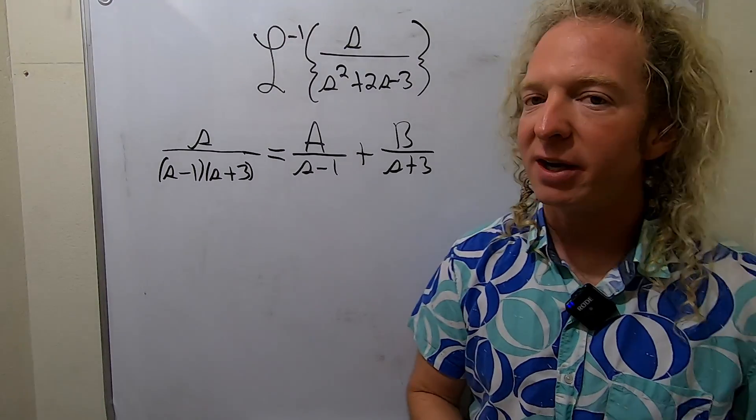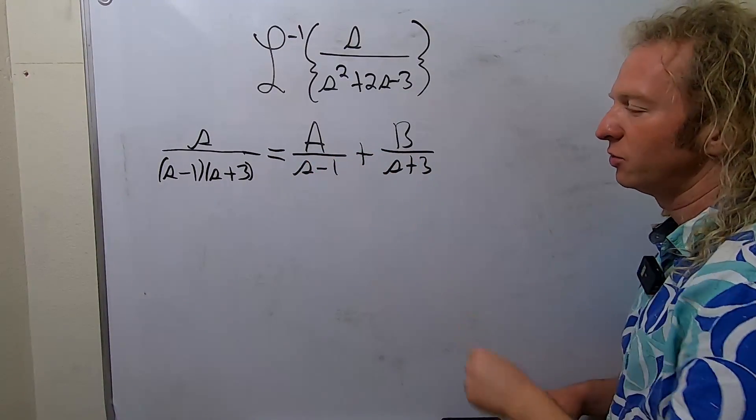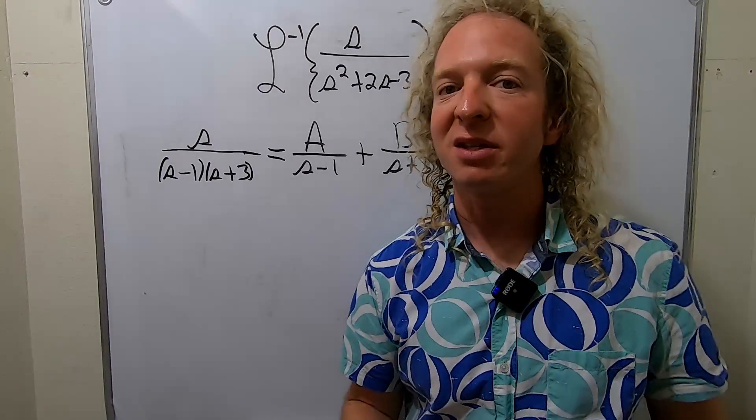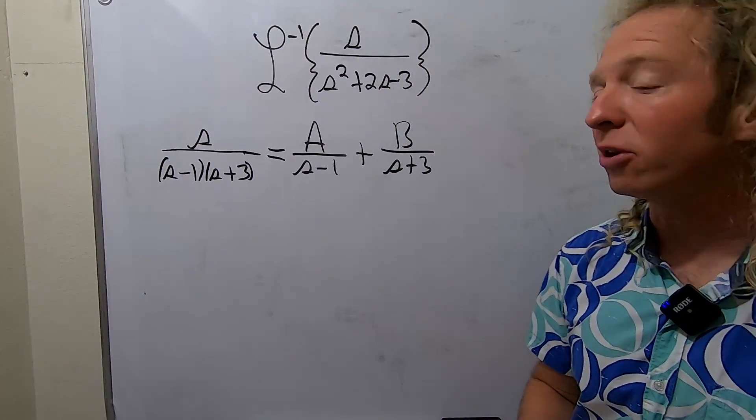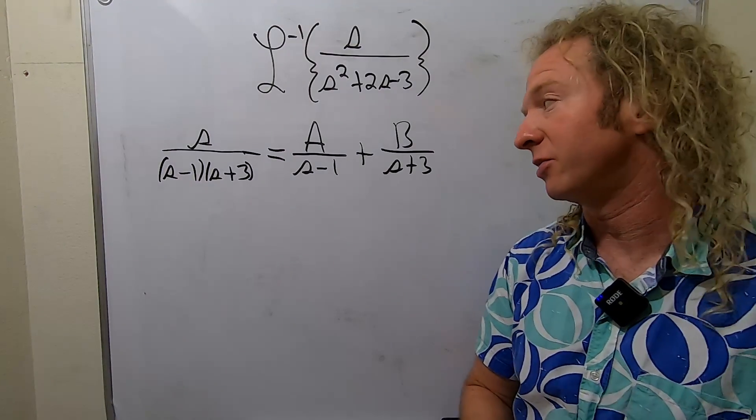We can use the cover-up method to find A and B. So whenever you have distinct linear factors like this, you can use what's called the Heaviside cover-up method. It's named after Oliver Heaviside. This is the same Heaviside after which the unit step function is named, actually.